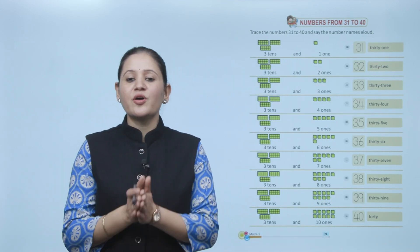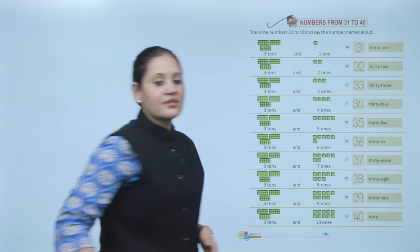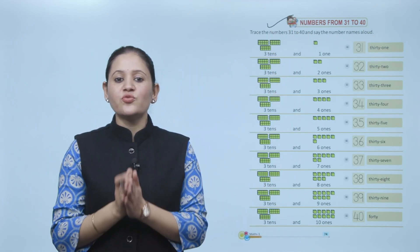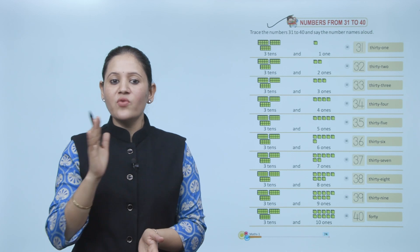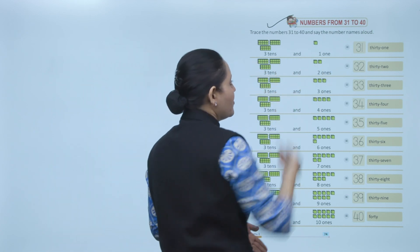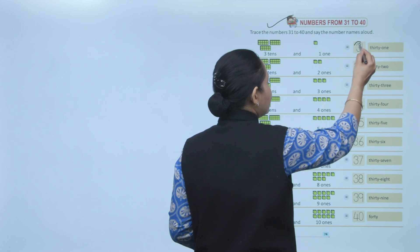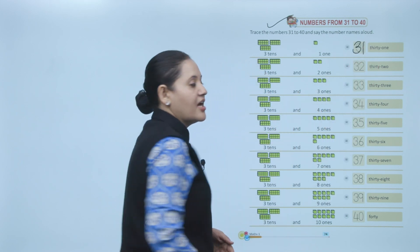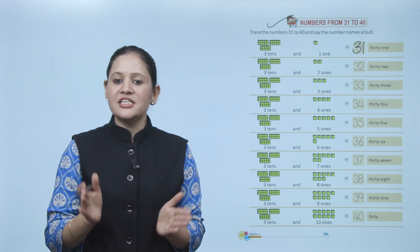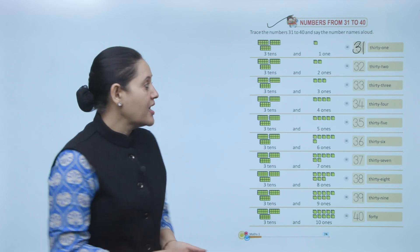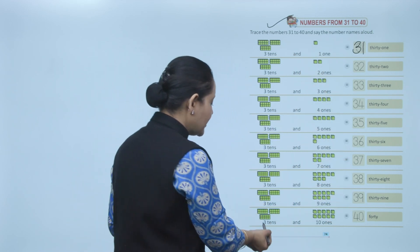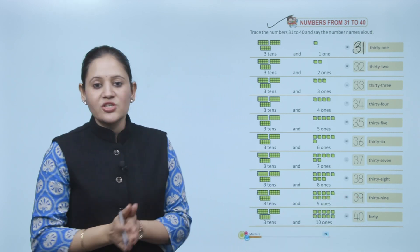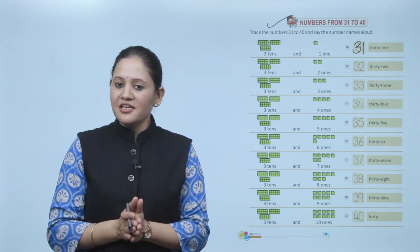Next, numbers from 31 to 40. Trace the number 31 to 40 and say the number name aloud. 31 means 3 tens and 1 one — that is number 31. Trace 3-1, and the number name is T-H-I-R-T-Y-O-N-E. Like this we'll write numbers up to 39. Then comes 40: 4-0. 40 means 3 tens and 10 ones. F-O-R-T-Y. Like this we'll trace the numbers and read the number names.